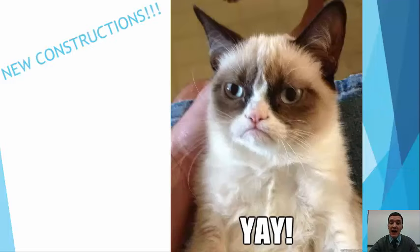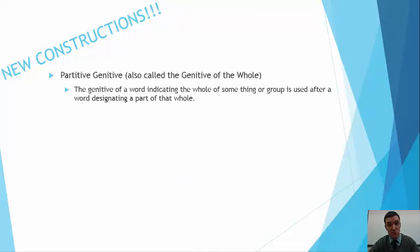Now, new constructions. Everyone loves new constructions. You've got new forms. You've got to use them in something. And so what we're going to use them in are these new constructions. First, most importantly of the bunch, the partitive genitive, which is also called the genitive of the whole. Now, I copied word for word the description that the book gives you, which is verbose. There's a lot going on here. It's a little confusing.